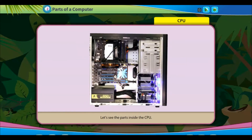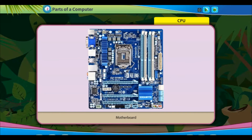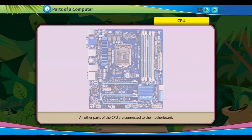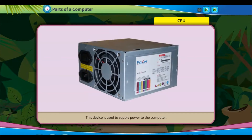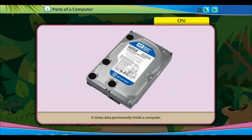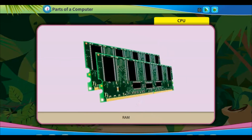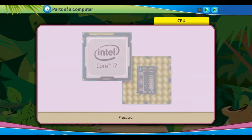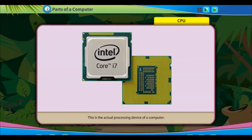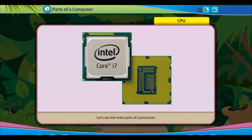All other parts of the CPU are connected to the motherboard. The SMPS is used to supply power to the computer. The hard disk drive stores data permanently inside a computer. RAM stores data temporarily inside a computer. The processor is the actual processing device of a computer.